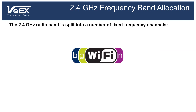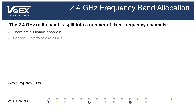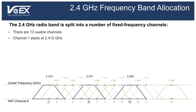The 2.4 GHz band is divided into 14 channels spaced 5 MHz apart, beginning with channel 1 centered on 2.412 GHz. Since it's easier to remember channel numbers than center frequencies, people use channel numbers from 1 to 14 to describe which channel their device is using.